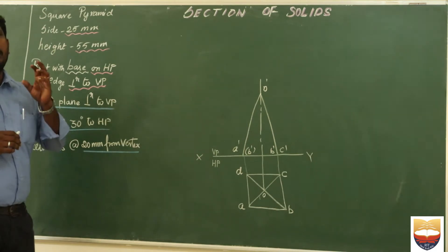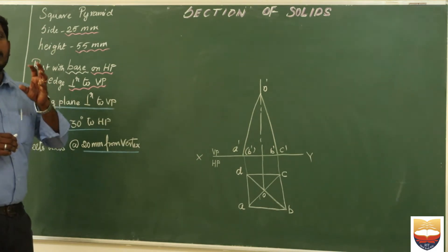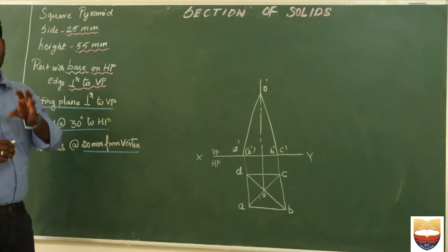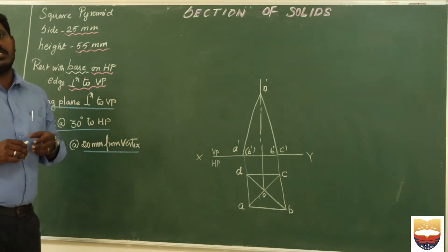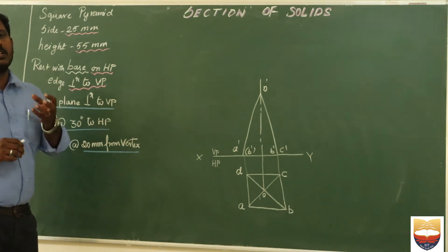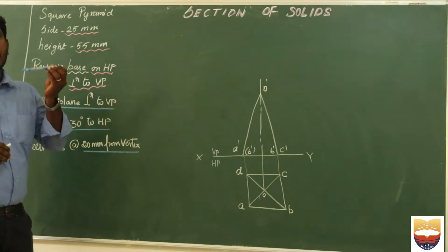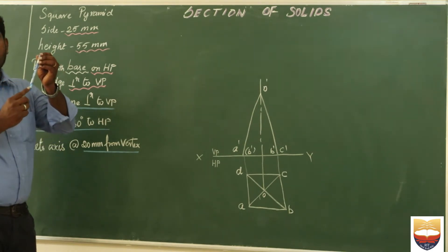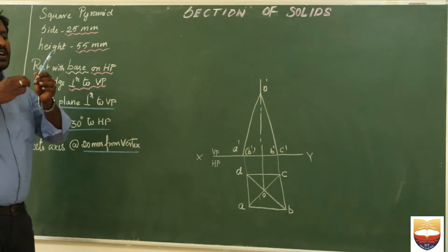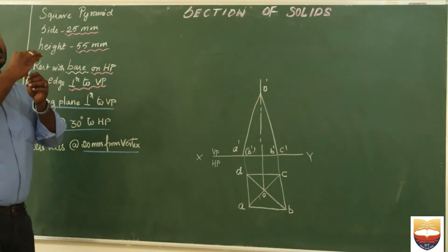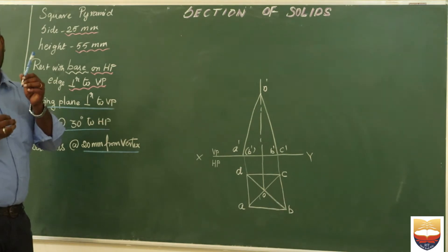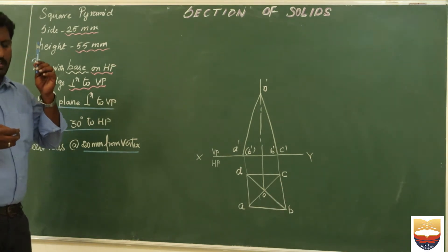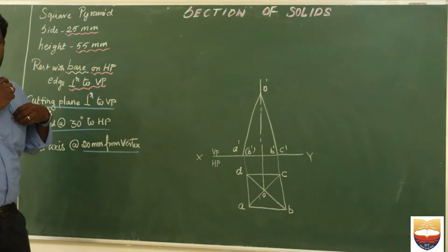The main necessity of this section of solids is used to identify the hidden parts. For example, if I am having a pen, the region which is inside this particular pen is not visible. If I try to cut this object, definitely the particular internal parts will be available. That is the major example for this particular section of solids.